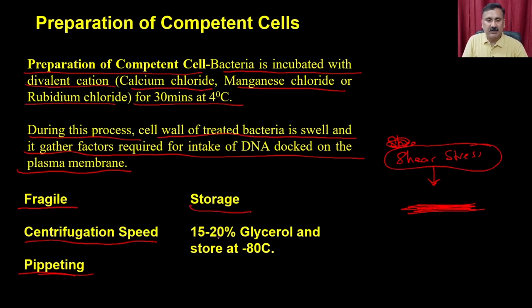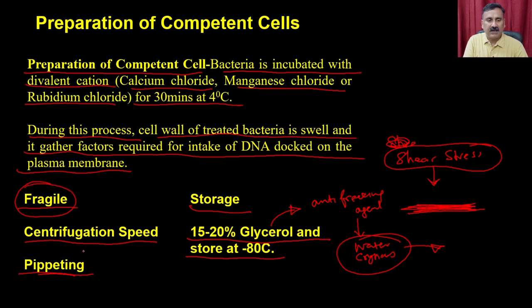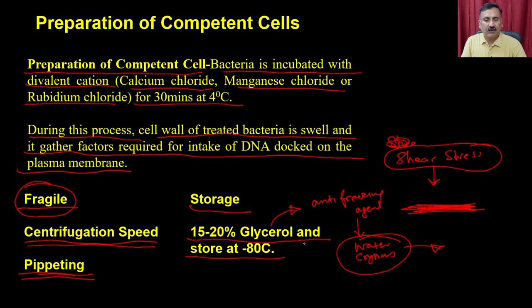To store the competent cells, add 15 to 20 percent glycerol and store at minus 80 degrees Celsius. The glycerol acts as an anti-freezing agent — it prevents the formation of ice crystals and protects the bacteria from any kind of damage. You must aliquot the cells into suitable volumes and use each aliquot completely, as you cannot pipette out portions and prepare more aliquots.